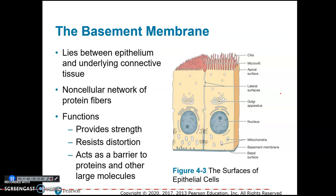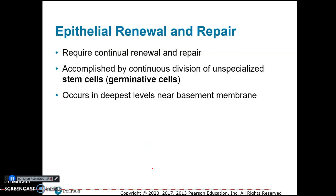The basement membrane forms the boundary between the epithelial tissue and the underlying connective tissue. It's a non-cellular network of protein fibers that provides strength and acts as a barrier. It's always found on the basal surface of epithelial tissue.